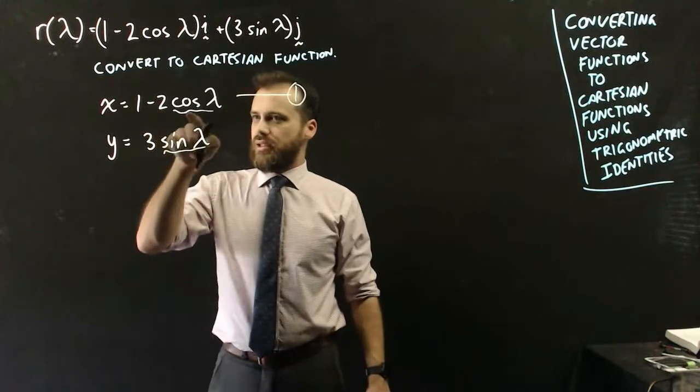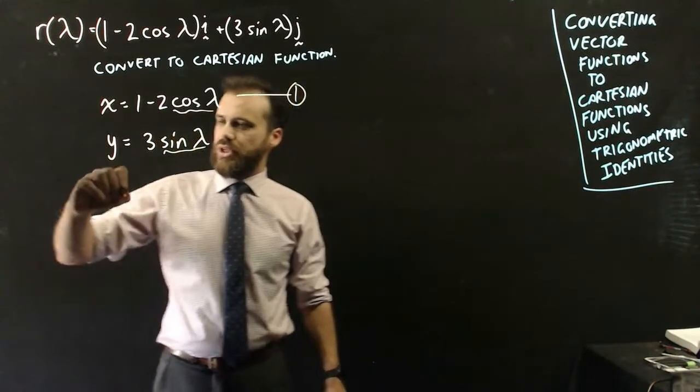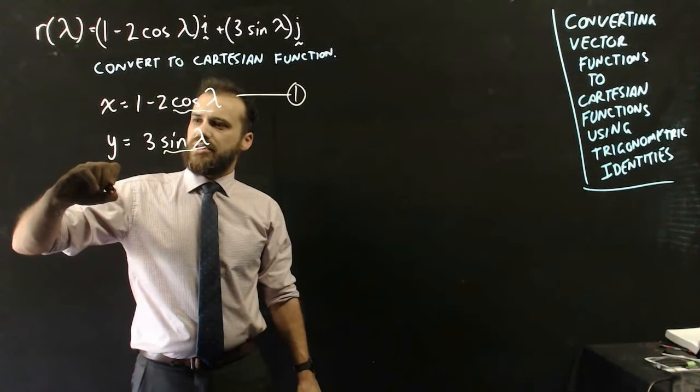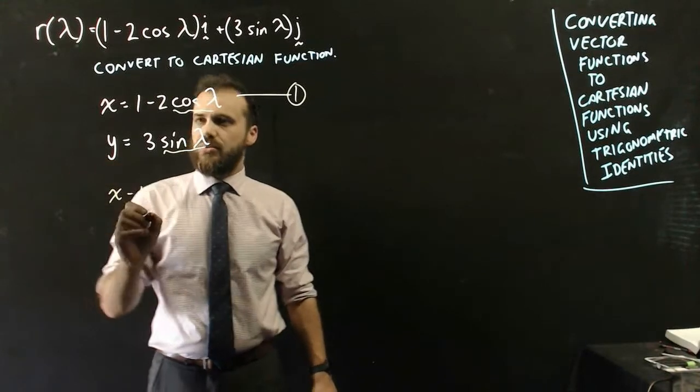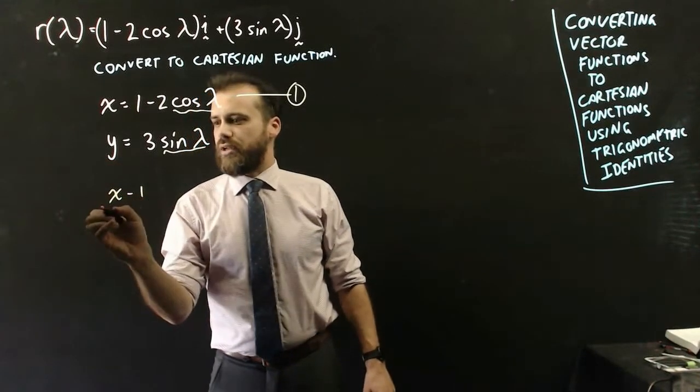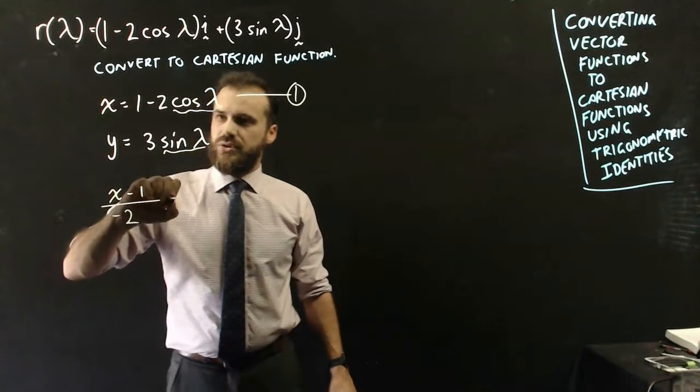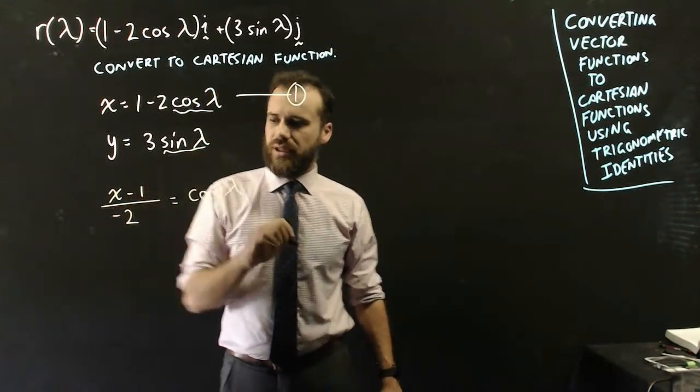1, and to make cos lambda the subject, I can say that that's going to be equal to x minus 1 divided by negative 2, and that's going to be equal to cos lambda.